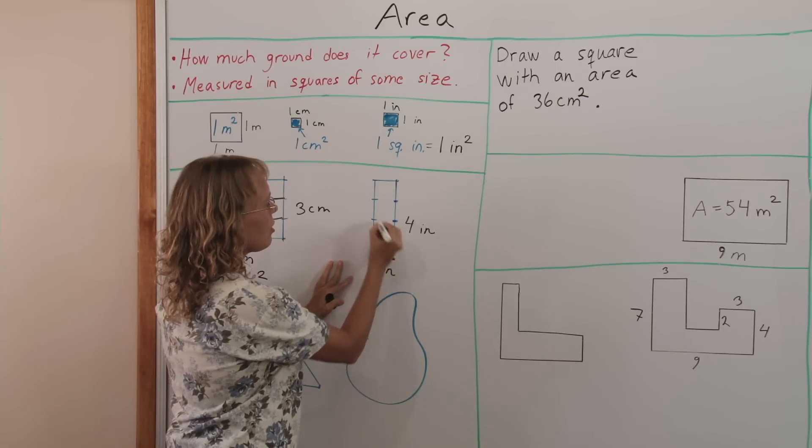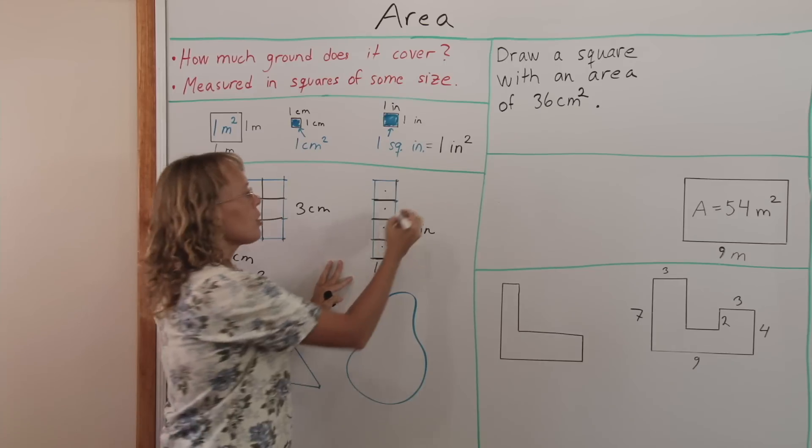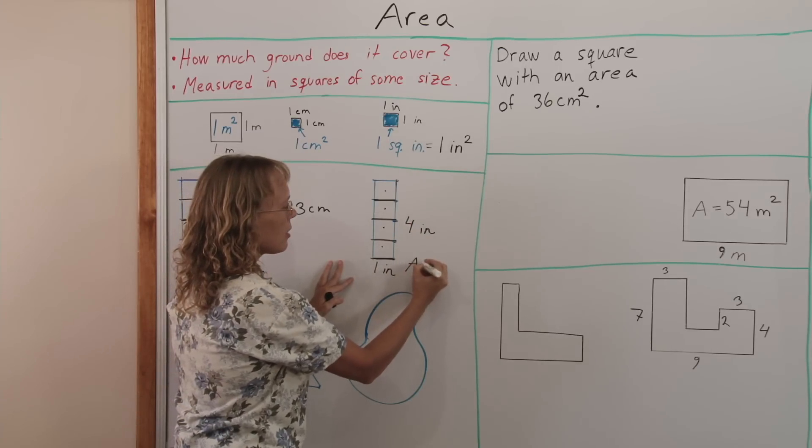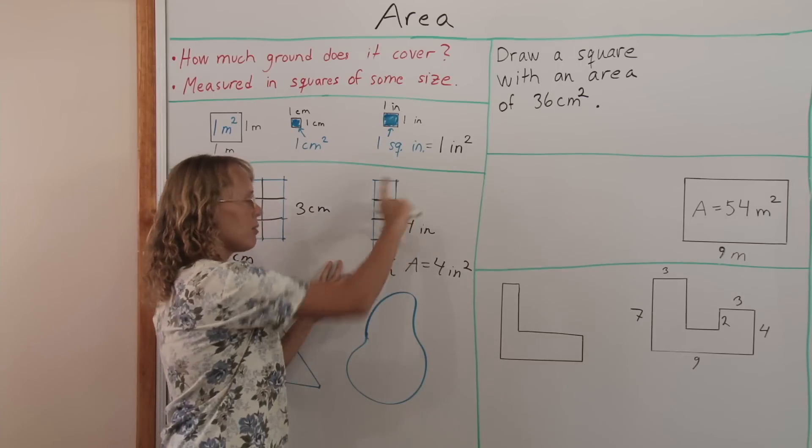And if I draw these, we can see how many squares there are: 1, 2, 3, 4. 4 square units. The area is 4 square units. And you could also multiply 1 times 4.